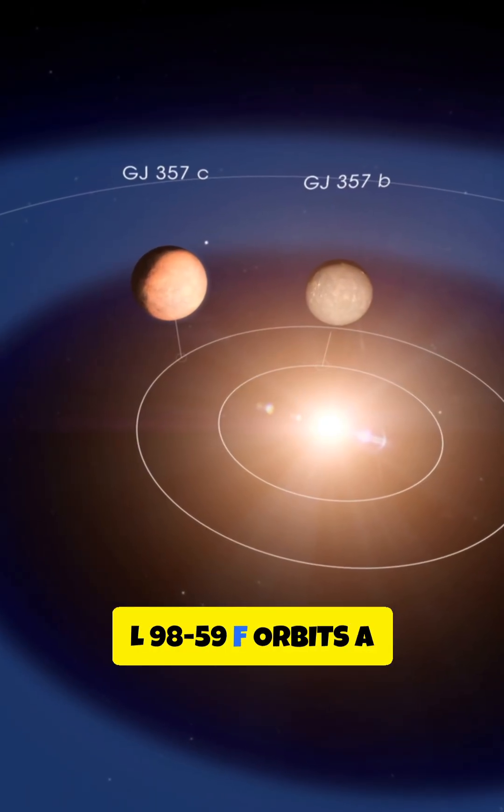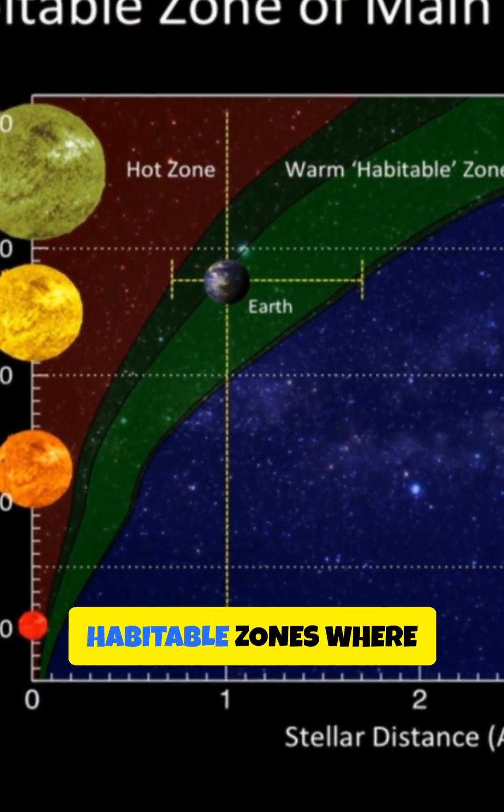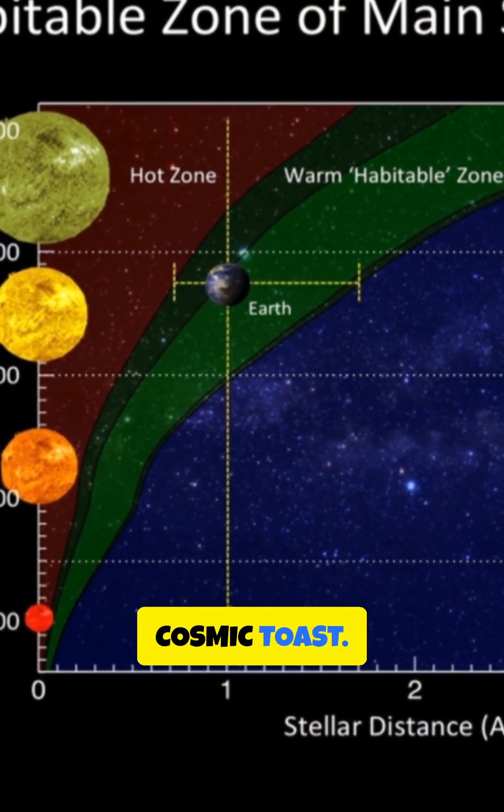Here's the kicker. L98-59f orbits a cool red dwarf star. That means snug habitable zones where planets cuddle close without turning into cosmic toast.